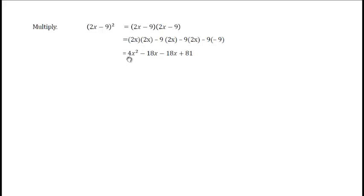Multiplying the first two. 2 times 2 is 4. X times x is x squared. Minus 18x minus 18x. And, then minus times a minus or a negative times a negative will give us a plus 81.